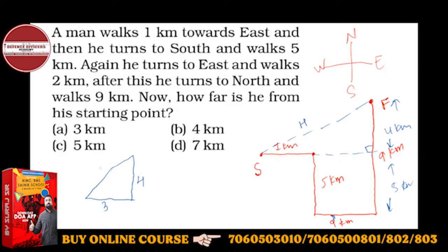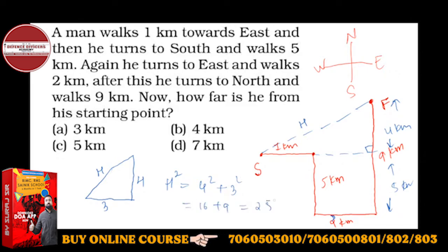This side is four, and this is the hypotenuse — you have to find this distance. So hypotenuse squared equals perpendicular squared plus base squared: four squared plus three squared, which gives 16 plus 9, nothing but 25. So H will be the root of 25 — that is 5 kilometers — which is the right answer.